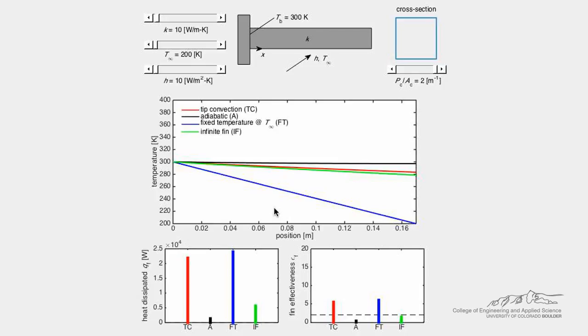This demo compares the spatial temperature profile in a fin with four different tip boundary conditions: the tip exposed to convection, an adiabatic tip, a tip at a fixed temperature equal to the fluid temperature T infinity, and an infinite fin.